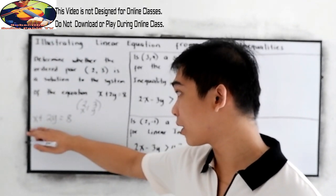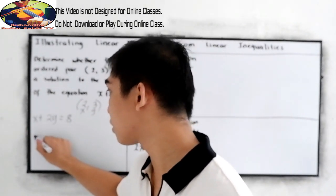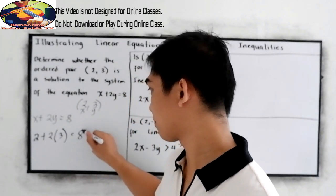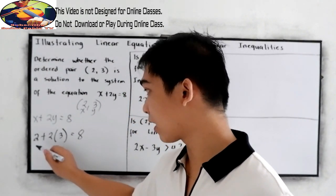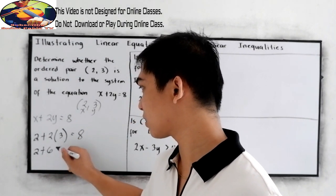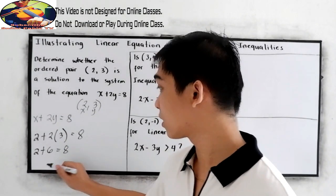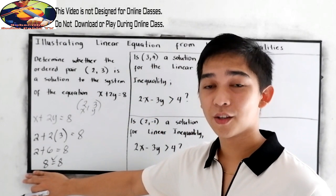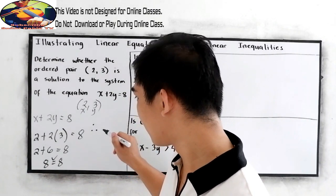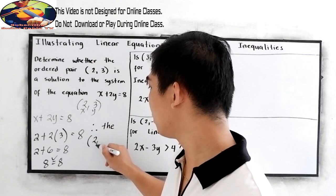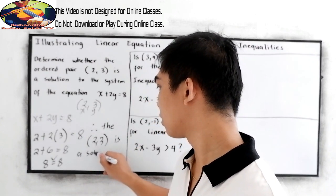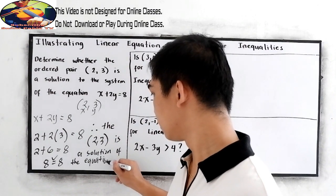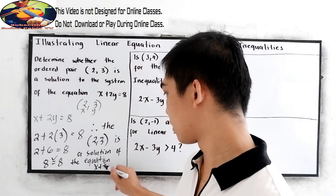Now we substitute into our equation: x is 2, plus 2 times y is 3, is equal to 8. Simplifying the left side: 2 plus 2 times 3 is 6, is equal to 8. Then 2 plus 6 is equal to 8, which equals 8. This is true. Therefore, the ordered pair (2, 3) is a solution of the equation x plus 2y equals 8.